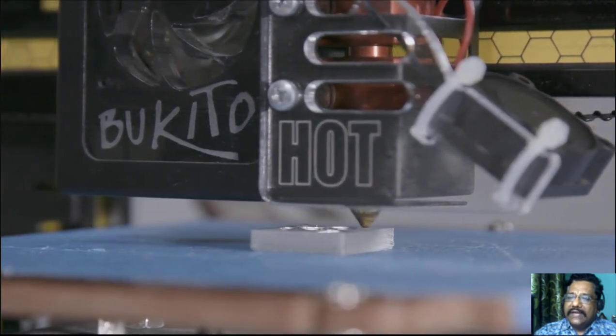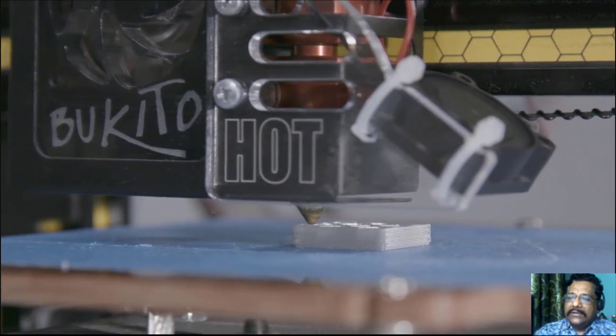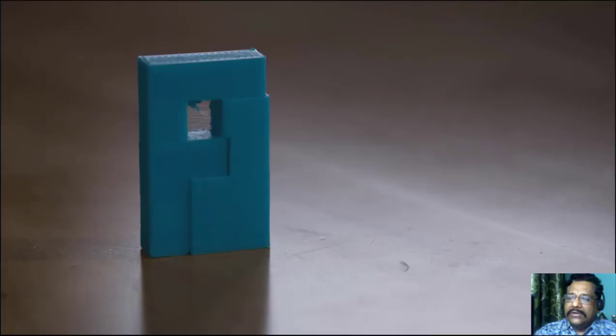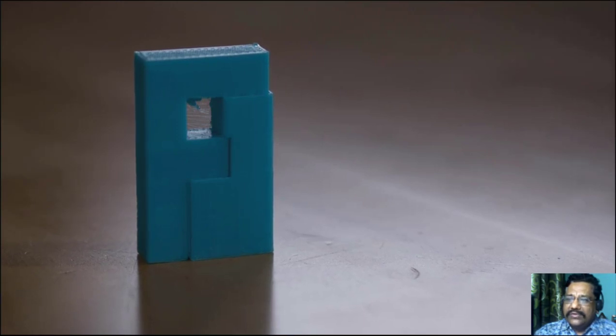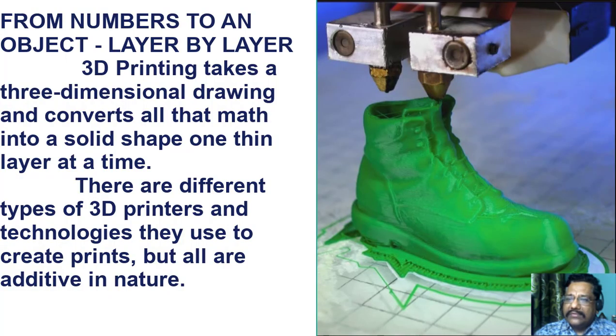It creates a solid shape using one thin layer at a time. That's where the magic happens. When we come down in the morning we see something starting to be created. We see this boot, and you can see the little layers in this print. That's the additive process, stacking layers on top of another.